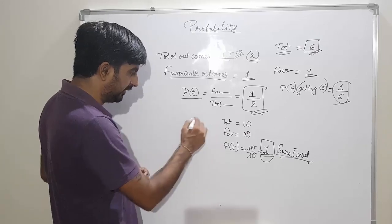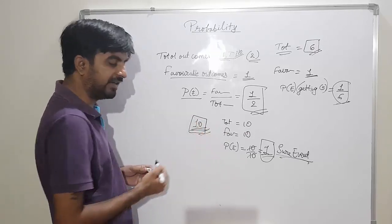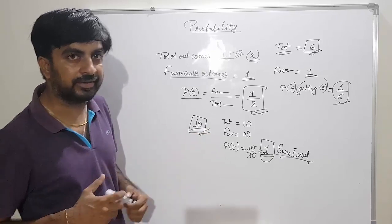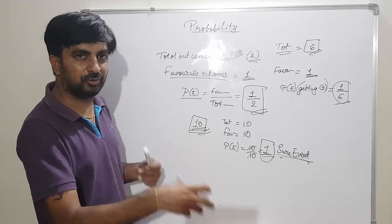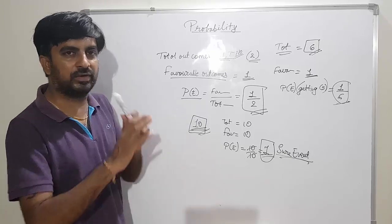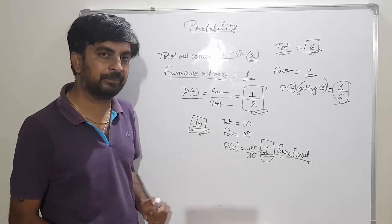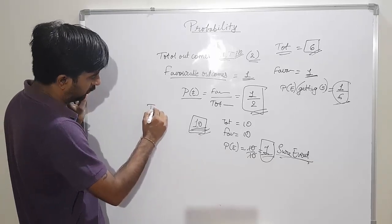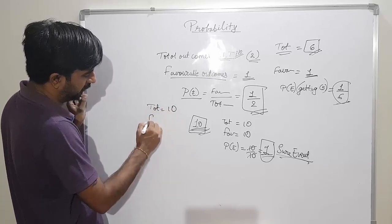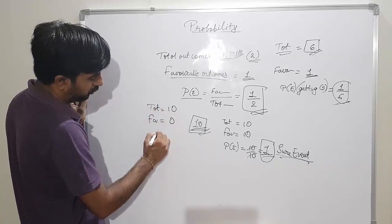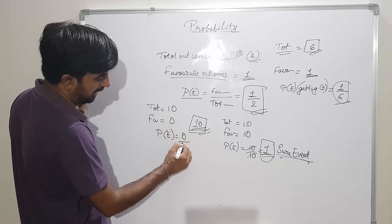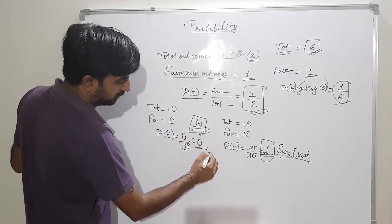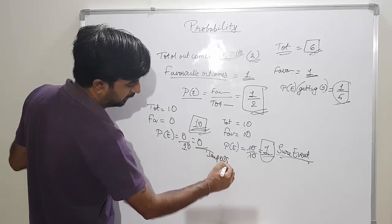Now from the same box of ten red color candies, if I tell you to find out the probability of getting a green color candy — if you close your eyes and take out any candy, you will never get a green color candy, because all candies are of red color. Total outcomes is ten, but favorable outcomes is zero. So probability is zero by ten, which equals zero. This type of event is called an impossible event.